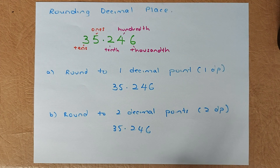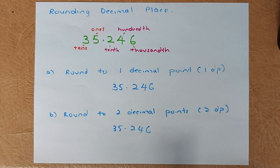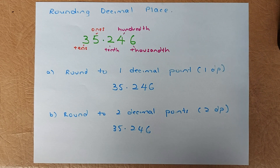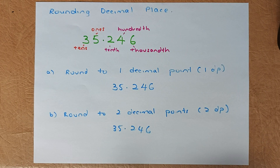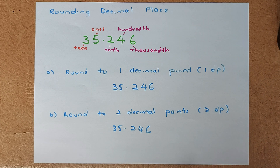You can write a number in two ways. One is very simple: 35.246. But the actual way to write it is: three tens, five ones, two tenths, four hundredths, and six thousandths. That's the correct way to write that number in words. Today we are going to learn how to round this number to one decimal point, or one DP, and two DPs, and so forth.